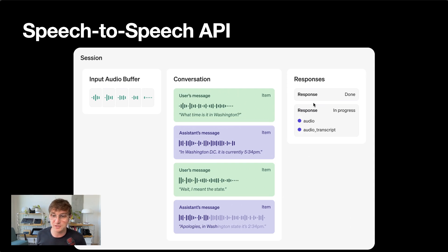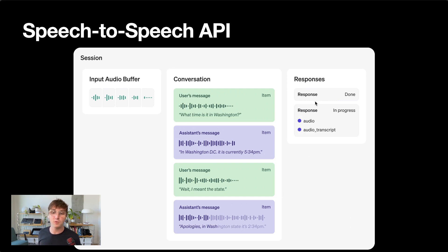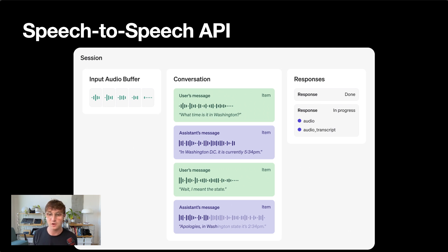In terms of your output, you actually get both the text and the audio output. The speech-to-speech API is going to generate text and audio at the same time, and I'll explain why this is useful in a minute.